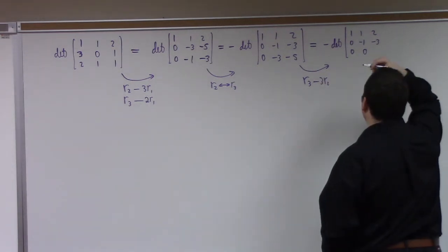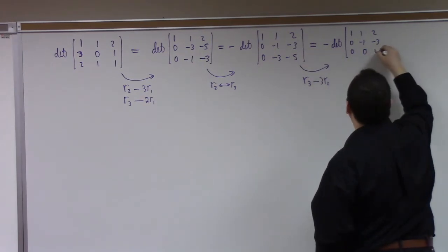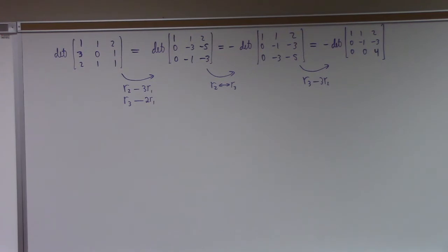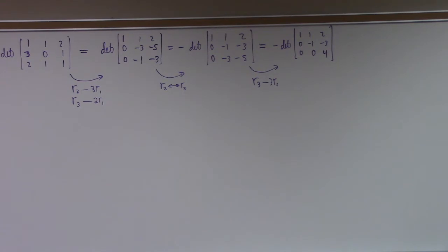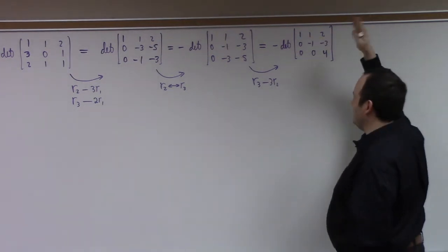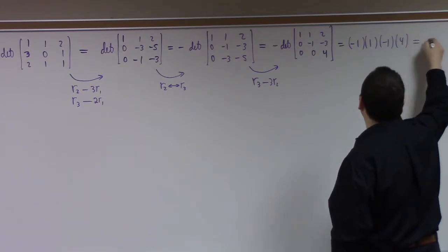This equals minus 1 times 1 times minus 1 times 4, which is 4. Now you might think that's a really weird way of calculating. I have mixed feelings about it myself. If we just expand across the top row, it's 1 times (0 minus 1) minus 1 times (3 minus 2) plus 2 times (3 minus 0), which is minus 1 minus 1 plus 6 — that's faster if you're fluent at it.